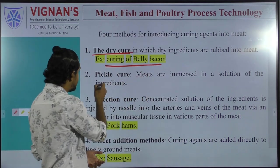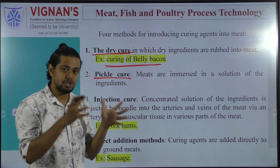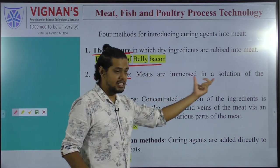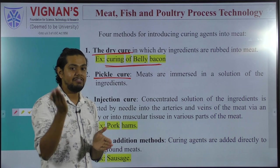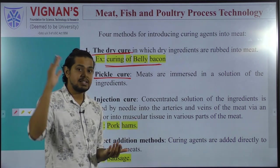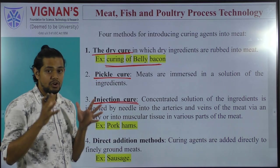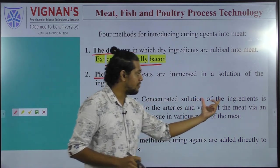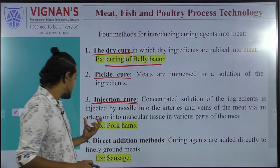The second method is pickle curing, where the entire carcass or a portion is immersed in a salt solution. Spices or condiments can also be included, but salt is the major constituent. The third is injection curing, where a concentrated salt solution is injected by needle into the arteries and veins of the meat, via artery into the muscular tissue in various parts of the carcass.